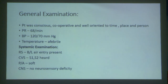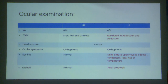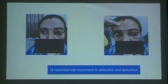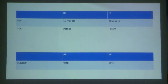On general examination the patient was conscious, cooperative and well oriented. Pulse rate was 68 per minute and BP was 120/70 mmHg. Systemic examination was within normal limits. On ocular examination, visual acuity was 6/6 in both eyes. Extraocular movements in the right eye were free, full and painless, whereas in the left eye there was restriction in adduction and abduction. There was mild diffuse upper eyelid edema, tenderness, local rise of temperature and axial proptosis in the left eye.